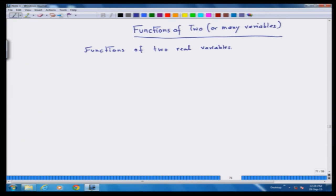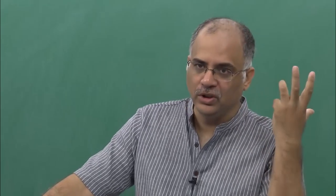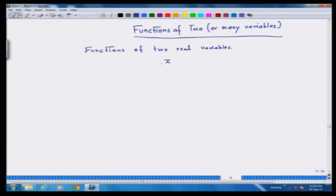You might be wondering that this is something very special or very artificial, and the function of one real variable was a natural thing. But I would like to convince you that the function of two variables is quite a natural thing, because when you add two quantities x and y, you are essentially performing a function of two variable operation. You are adding x and y and we call that addition f(x,y). Hence, this is an example of a function of two variables.